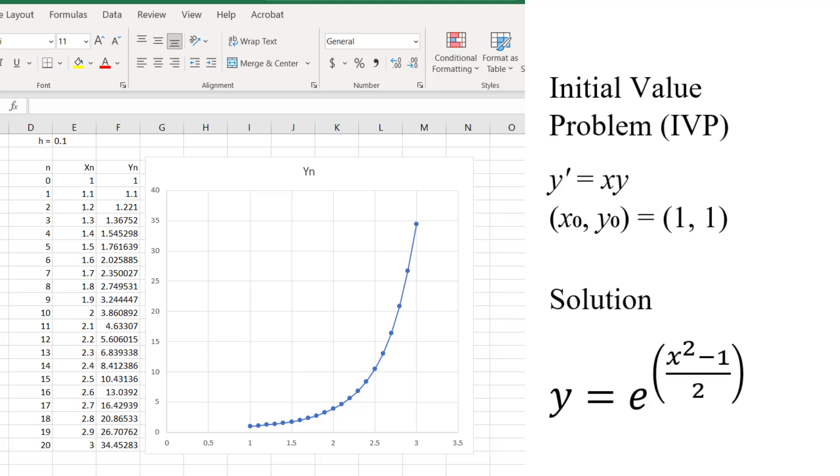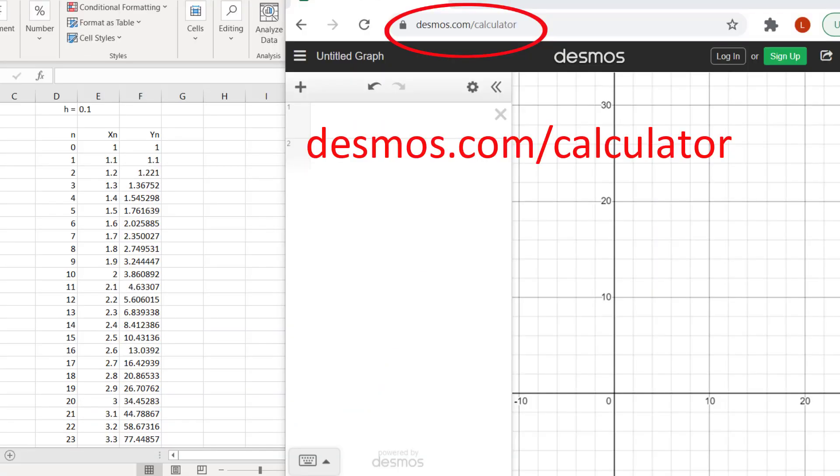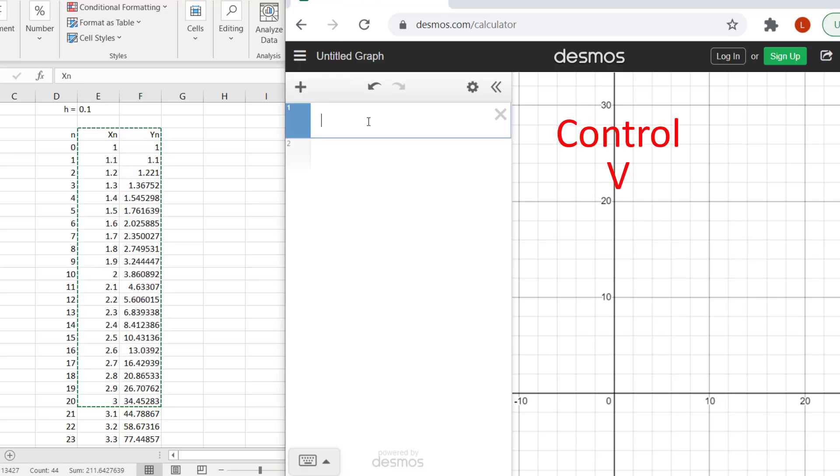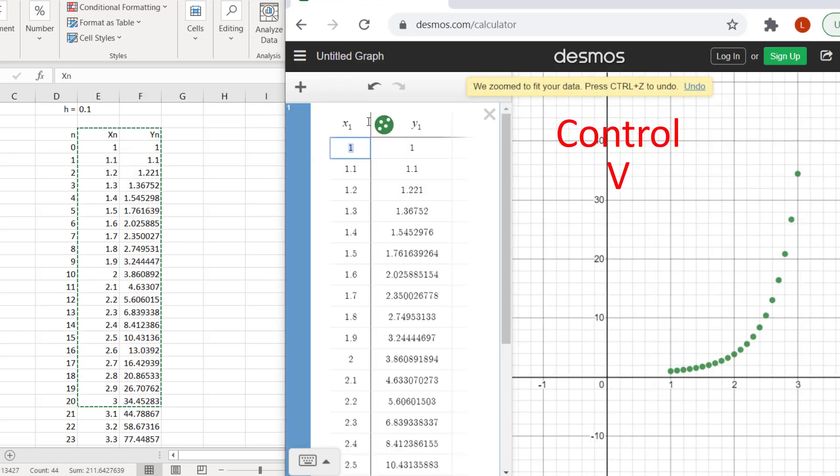I would like to graph this together with our approximate solutions, but I can't get Excel to do that, so we're going to use Desmos.com/calculator. In Excel, select the x and y values for the points we want. I'm going to go from x equals 1 to x equals 3. Control C to copy this into the clipboard. Then go into Desmos, click in the first line, and Control V to paste.